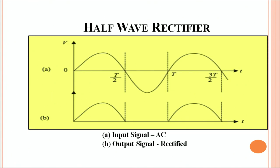For the half wave rectifier, figure A indicates the input signal — there is a continuous change with a negative and a positive cycle fed as input to the rectifier. During the positive half of the cycle, the load resistance allows the current and you observe an output. As soon as the negative cycle is fed into the diode, the diode is now in reverse bias and blocks the current, not allowing the negative cycle to pass. So all positive cycles are conducted through the half wave rectifier while the negative cycles are blocked, giving the output shown in figure B.